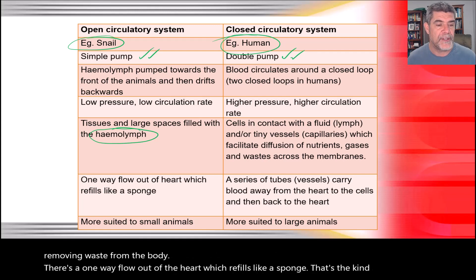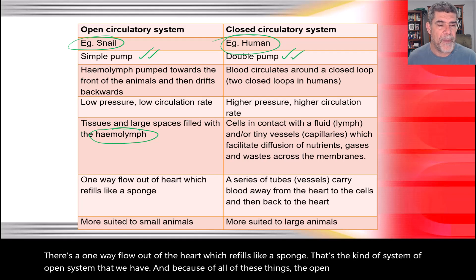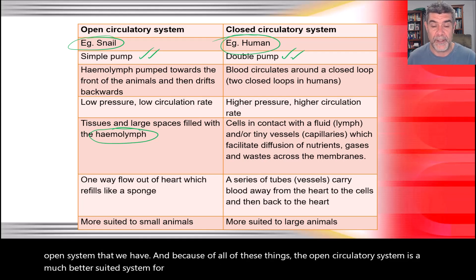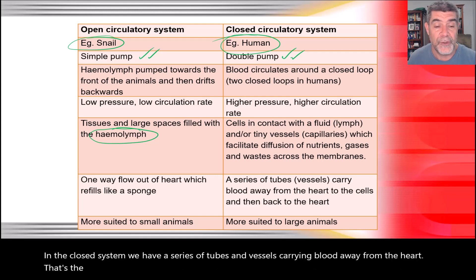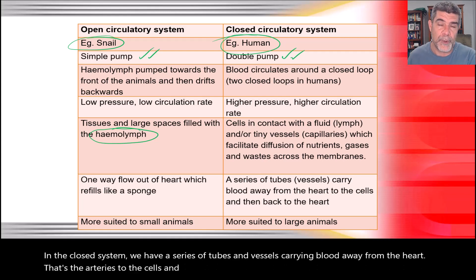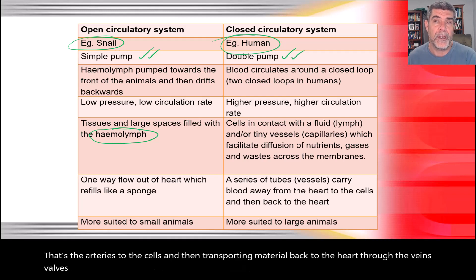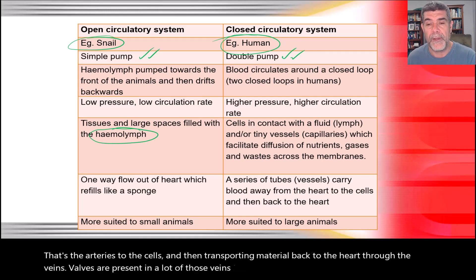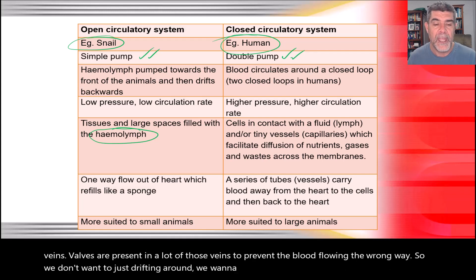In the open system there's a one-way flow out of the heart which refills like a sponge, making it much better suited for small organisms. In the closed system, arteries carry blood away from the heart to cells, and veins transport material back to the heart. Valves in the veins prevent blood flowing the wrong way, ensuring it continually flows in one direction.